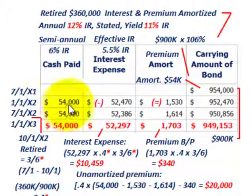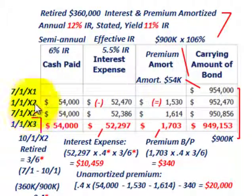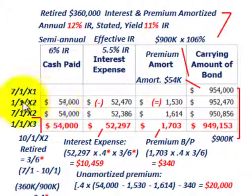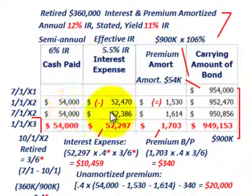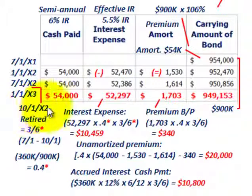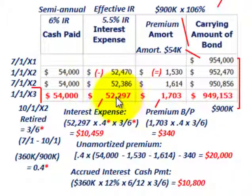On 7-1-X1, we issued the bonds at $954,000. The first payment on 1-1-X2 was $54,000, with interest expense and premium amortization calculated. The second period on 7-1-X2 similarly had a cash payment, interest expense, and premium. The retirement date of 10-1-X2 falls between payment dates 7-1-X2 and 1-1-X3. So the retirement occurs three months into the six-month payment period.